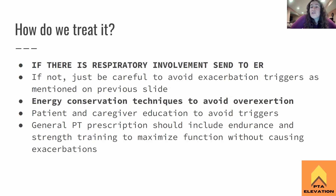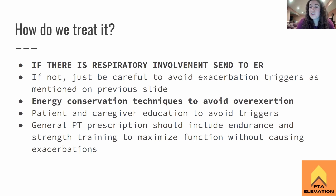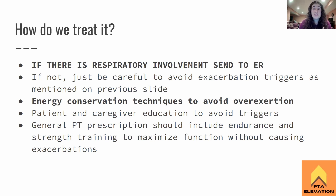How are we treating it? If there is respiratory involvement, we send them immediately to the ER. If they're not having respiratory involvement — it just looks like they're on the recumbent bike and their legs are weak — we're careful not to overexert them and avoid triggers such as heat, stress, illness, increased activity, pregnancy, and certain medications. The biggest thing with these individuals — and this is what the boards loves — is energy conservation techniques to avoid overexertion. Pace them: a couple of minutes on the bike, rest, a couple more minutes, slowly increasing endurance. Lots of rest breaks.